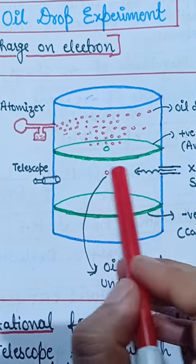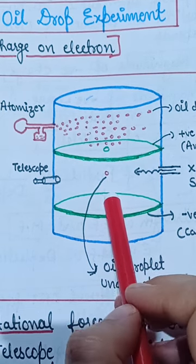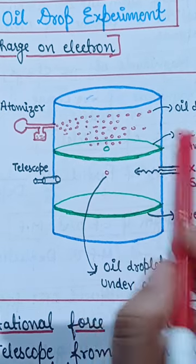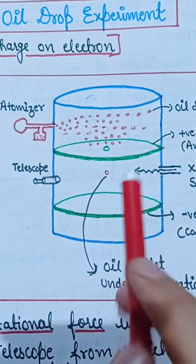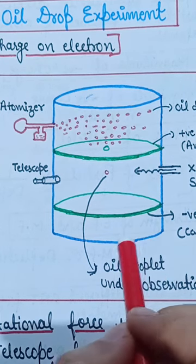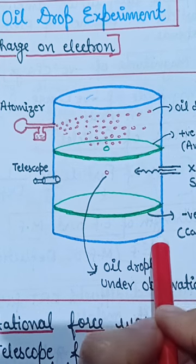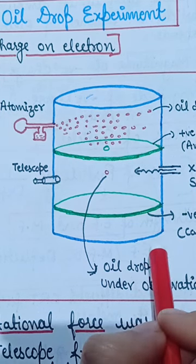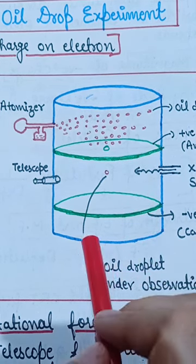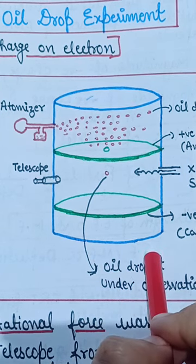Now, what do we do at one stage? We keep it stationary, and at that time, you equate both forces. In this Millikan oil drop experiment, Millikan was able to find out the charge on the electron, which equals 1.6 × 10^-19 coulombs. You can check a detailed lecture on the channel. Thank you so much.